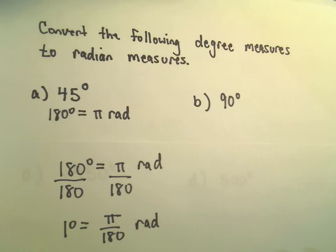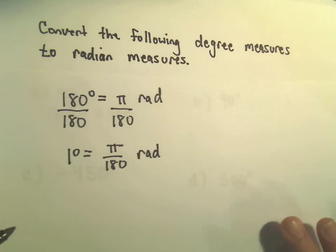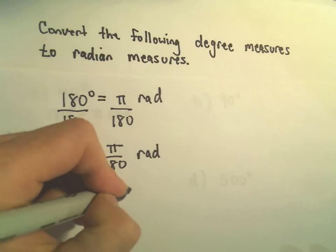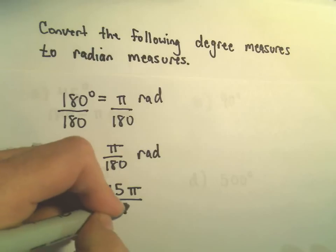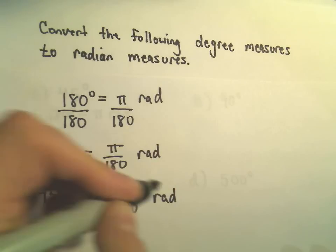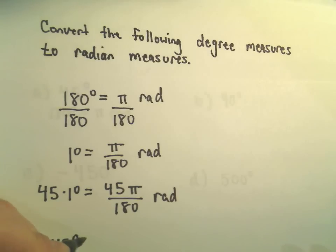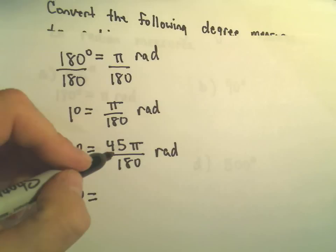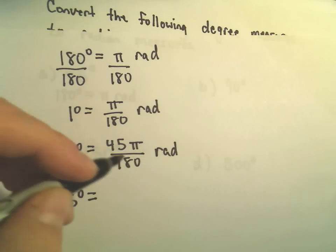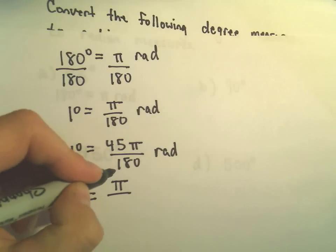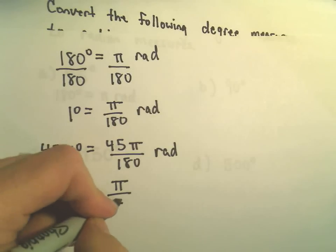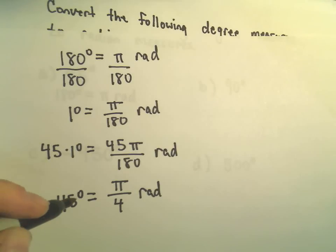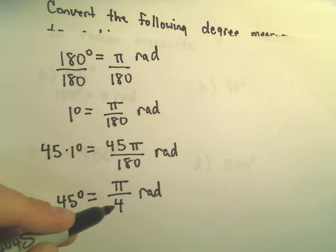So it says 1 degree is pi over 180 radians. And I don't want just 1 degree. I want 45. So I'm going to multiply both sides here by 45. And so now I just simply try to reduce this value on the right side. So 45 does go into 45 once. 45 also goes into 180 four times. So it says 45 degrees is going to be the same thing as pi over 4 radians.